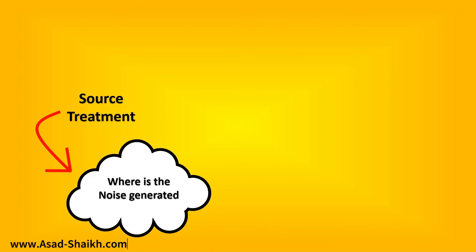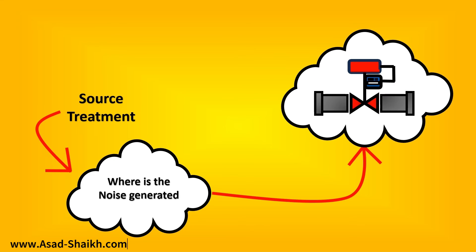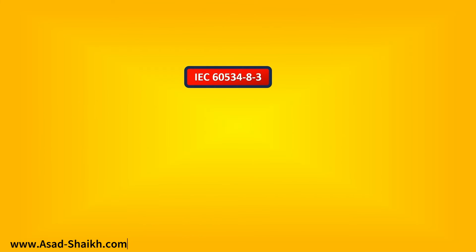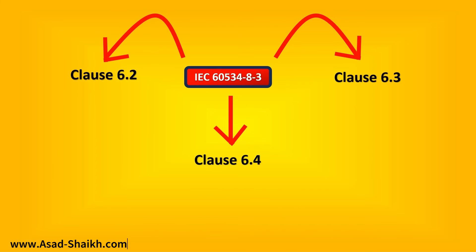Let us look into understanding source treatment in detail. Source treatment—the first question to be asked is where is the noise being generated, and the answer is it is inside the control valve. So we will look into what techniques are required. Let's look into the IEC standard 8-3, which tells you three important types of trim are defined in the standard in order to reduce the control valve noise. Clause 6.2 deals with single stage multi-flow path trim. Clause 6.3 deals with multi-stage single flow path trim. And clause 6.4 deals with multi-stage and multi-flow path trim.